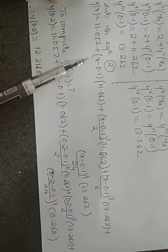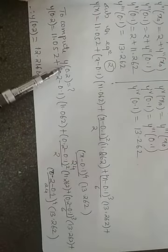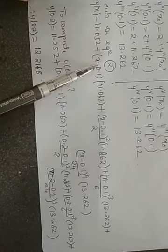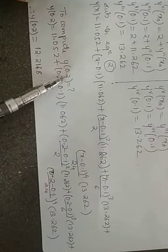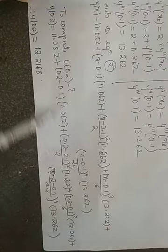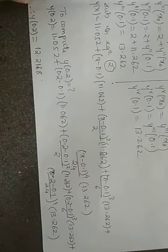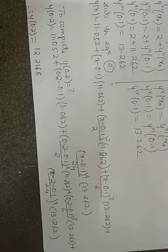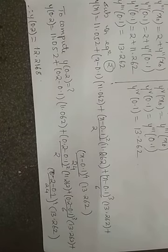Substituting all values into the Taylor series expansion for Stage 2 and computing y(0.2) by substituting x = 0.2, then simplifying on the calculator gives y(0.2) = 12.2168. This is the numerical solution for the given differential equation.